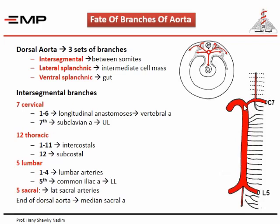The intersegmental arteries have the same number as the vertebrae: seven cervical, twelve thoracic, five lumbar, and five sacral. Two of the intersegmentals become large because they grow into the developing limb buds. The seventh cervical intersegmental forms the subclavian artery and continues into the upper limb bud as the axillary and brachial artery. The fifth lumbar intersegmental forms the common iliac artery on each side. In the thorax, abdomen, and pelvis, the other intersegmentals form segmental arteries — the intercostal arteries, four lumbar arteries, and lateral sacral arteries.